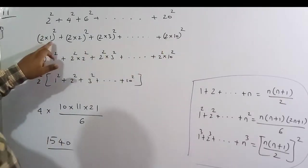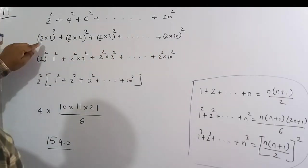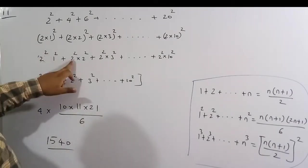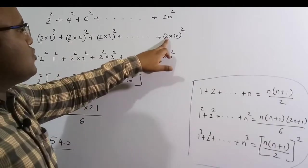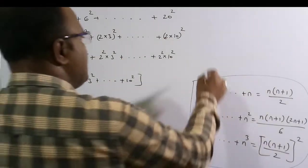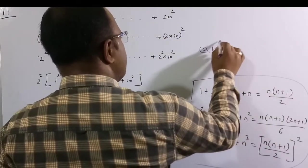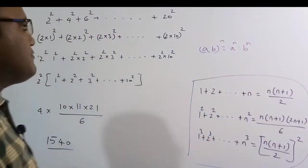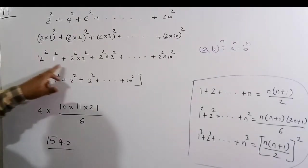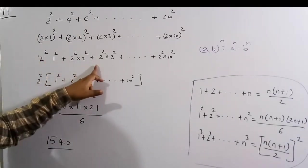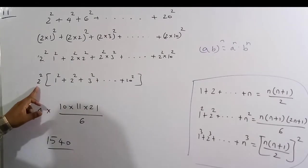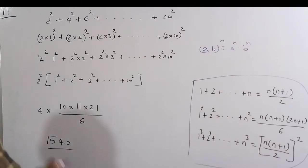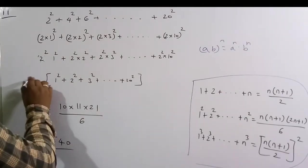Splitting each term: 2²×1² + 2²×2² + 2²×3² + ... + 2²×10², using the rule (a×b)^m = a^m × b^m. Since 2² is common, we take it out: 4 × (1² + 2² + 3² + ... + 10²).